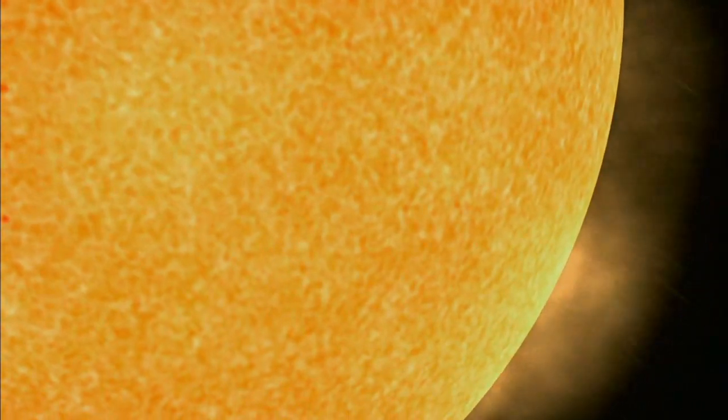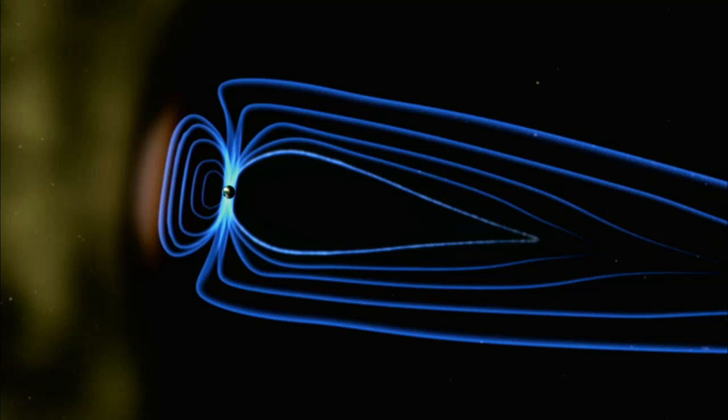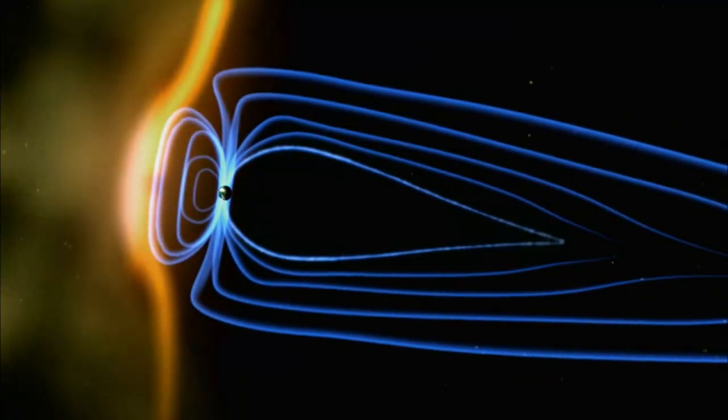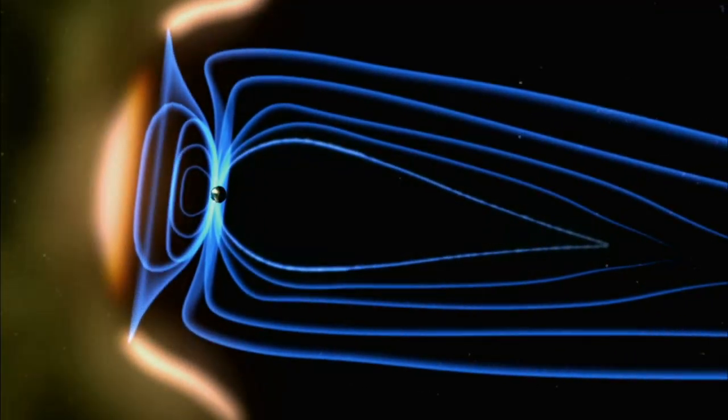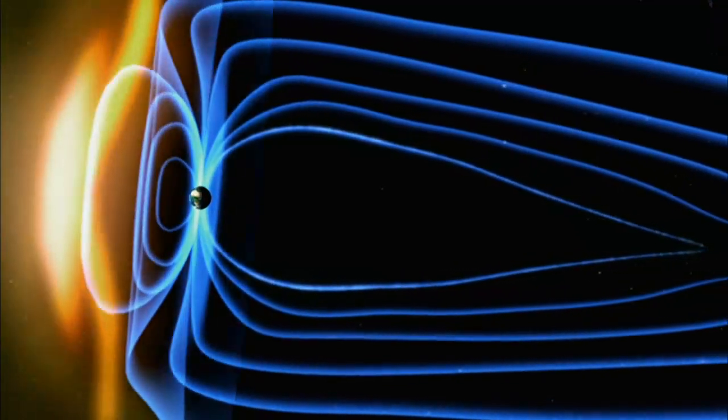It turns out that the aurora's beauty begins with a stream of deadly energy, charged particles from the sun called the solar wind. Streaming across space at nearly a million miles an hour, the deadly radiation would render Earth as lifeless as the Moon.